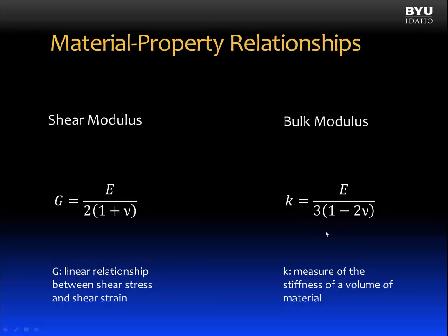Another relationship is the bulk modulus, which is a measure of the stiffness of a volume of material. It can also be derived using generalized Hooke's Law equations, and from this expression we see that there is a limit on Poisson's ratio — in fact, Poisson's ratio cannot be greater than 0.5. For most metals used in engineering, Poisson's ratio has a value of about 0.3.